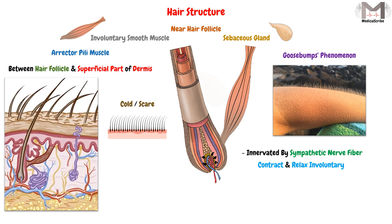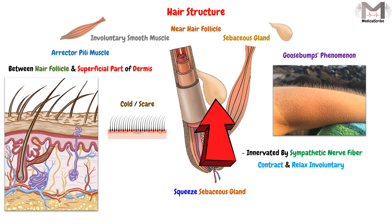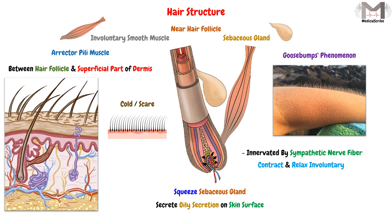At the same time, when the erector pili muscle contracts, it squeezes the sebaceous gland positioned between the hair and the muscle. As a result, the gland secretes its oily secretion onto the skin surface, which also has many functions that will be discussed later.